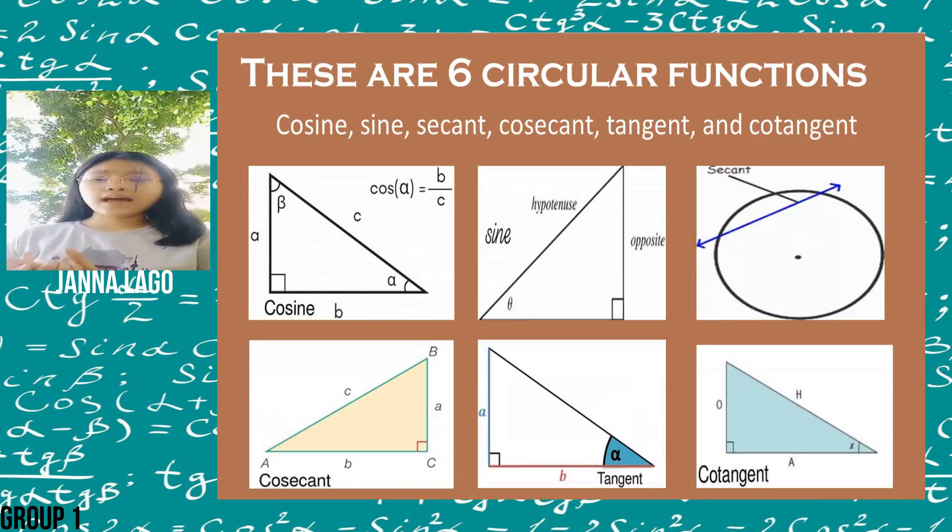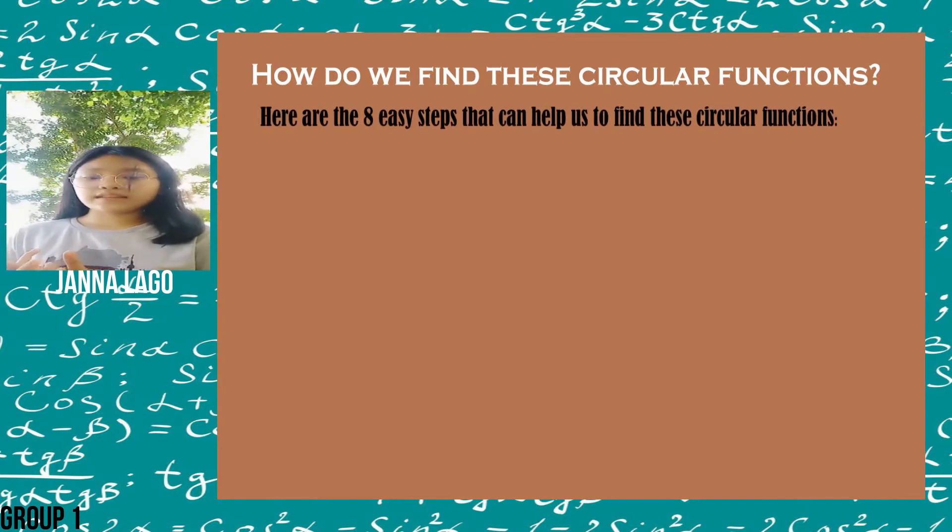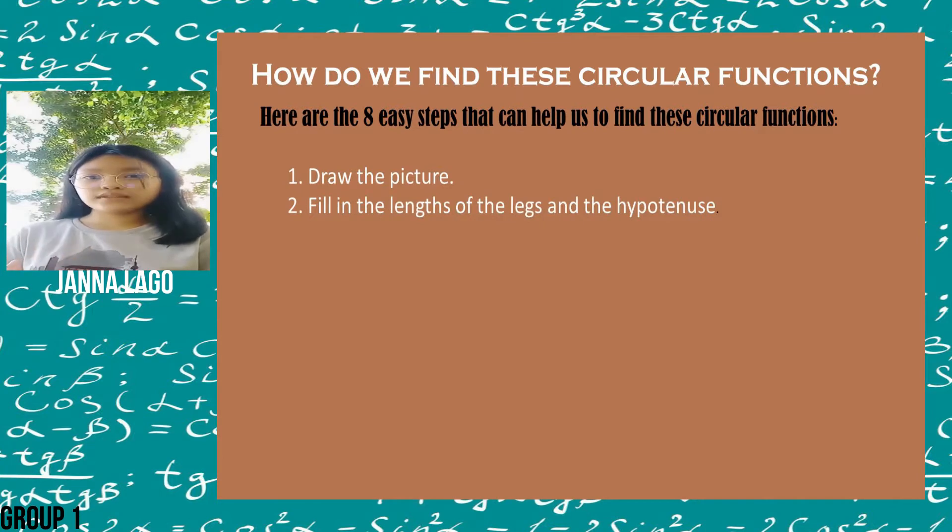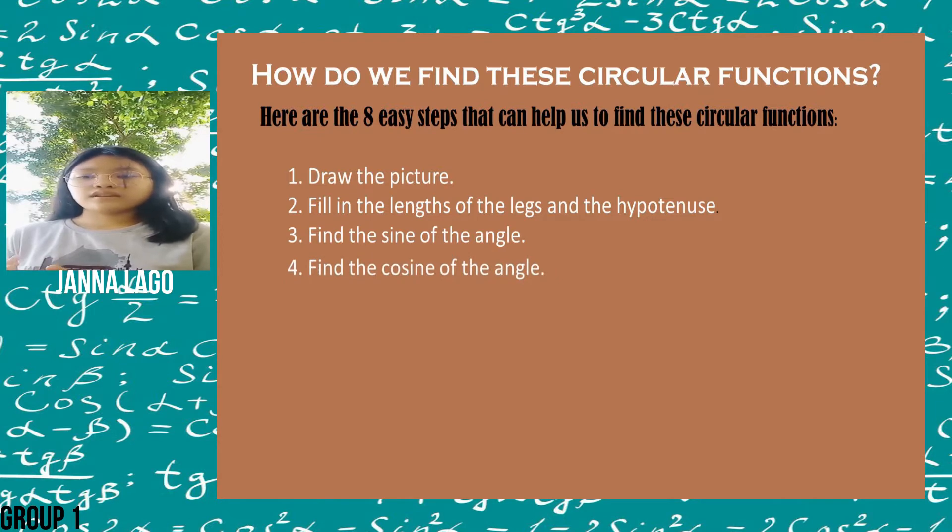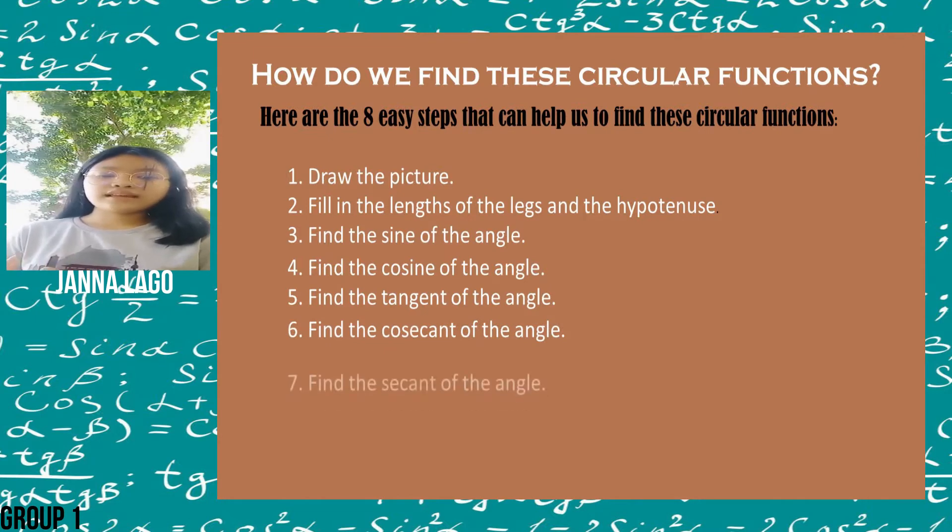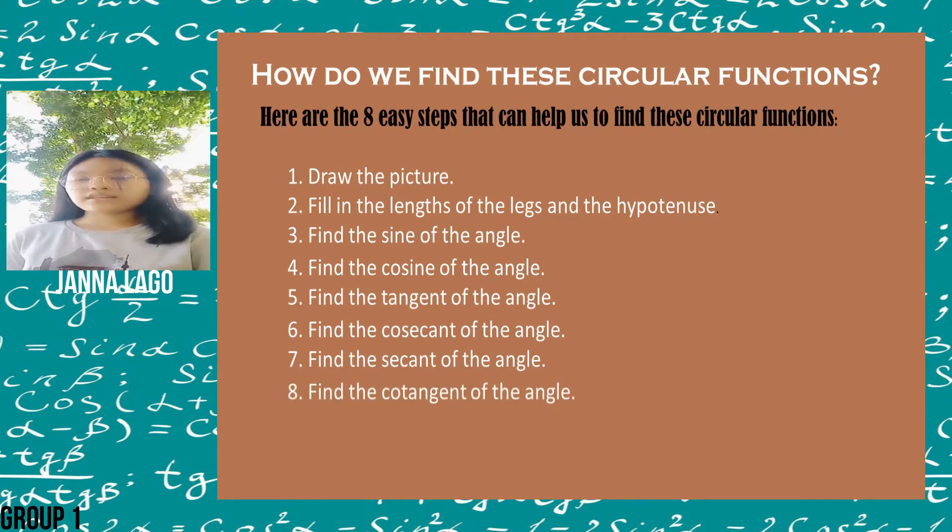How do we find circular functions? Here are the eight easy steps that can help us find these circular functions. First, draw the picture. Second, fill in the length of the legs and the hypotenuse. Third, find the sine of the angle. Fourth, find the cosine of the angle. Fifth, find the tangent of the angle. Sixth, find the cosecant of the angle. Seventh, find the secant of the angle. And eighth, find the cotangent of the angle.